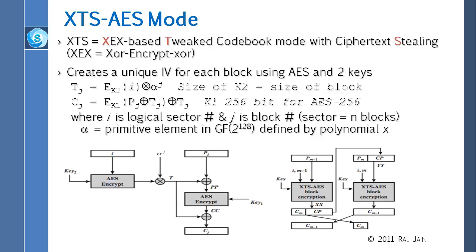You have many blocks per sector. You take sector number I and block number J, create the tweak which is a random number, and then do Exclusive-OR, encrypt, Exclusive-OR. This encryption is AES encryption — both operations are AES encryption. One is 128-bit encryption and the other is 256-bit encryption, so these are different size encryptions.